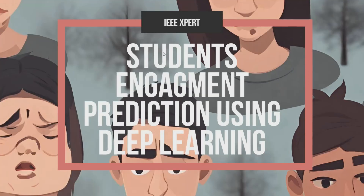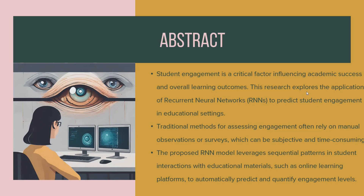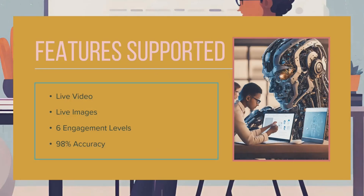This is our project presentation: Student Engagement Prediction Using Deep Learning. In our proposed system, instead of KNN we are going to use a Recurrent Neural Network model, which overcomes the traditional KNN drawbacks with higher accuracy. The project supports live video and live images, with six types of engagement levels: engaged, highly engaged, likes the topic, not engaged, not engaged, and sleeping. The RNN accuracy achieved is 98%, which is higher compared to previous models.